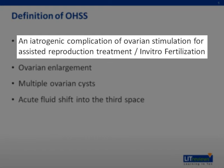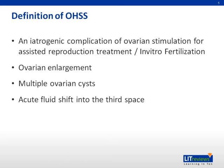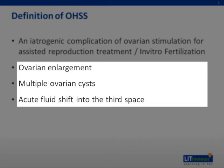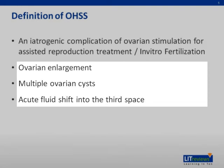Following gonadotropin therapy, OHSS usually develops several days after oocyte retrieval or assisted ovulation. This syndrome is characterized by ovarian enlargement due to multiple ovarian cysts and an acute fluid shift into the extravascular space. Results include ascites, hemoconcentration, hypovolemia, and electrolyte imbalances.